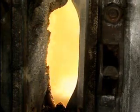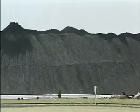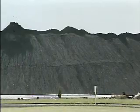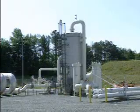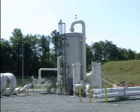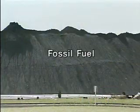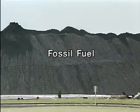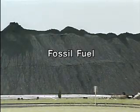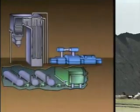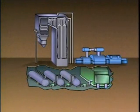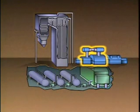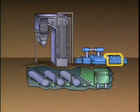The energy conversions that take place inside a fossil fuel plant change the energy stored in coal, oil, or natural gas into electricity. The term fossil fuel refers to the fact that the sources of the fuels are the fossilized remains of plants and animals. Most of the energy conversions take place in three main components: the boiler, the steam turbine, and the generator.